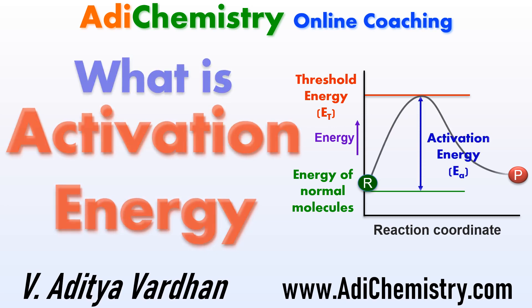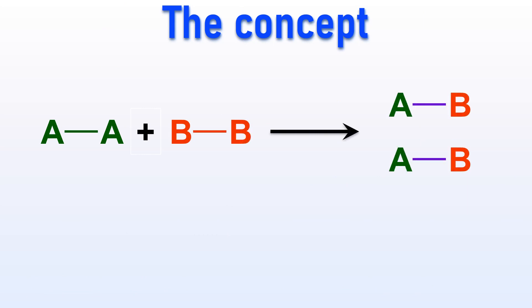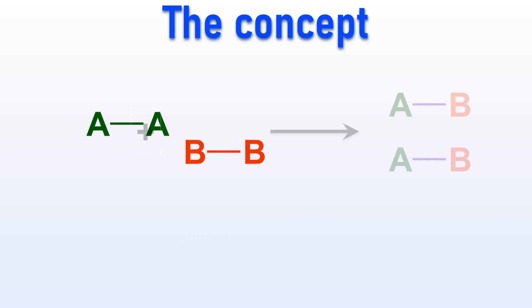Okay now, let us dive straight into the topic without any further delay. Let us examine the reaction between molecules A2 and B2 which leads to the creation of two AB molecules. As is typical in chemical reactions, the initial step involves the breaking of existing bonds followed by the subsequent formation of new bonds between the A and B atoms.